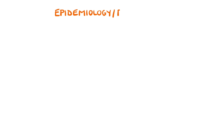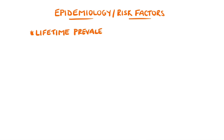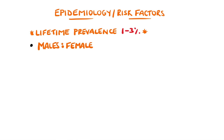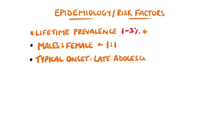Bipolar disorder has a lifetime prevalence of around one to three percent, with males and females being affected approximately equally. It most commonly starts in late adolescence or early adulthood.